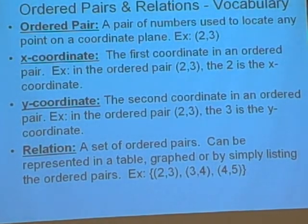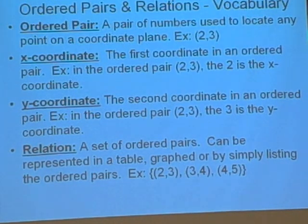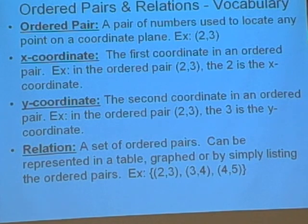The x-coordinate is the first coordinate in an ordered pair. In our example, the 2 is the x-coordinate. The 3 would be the y-coordinate, the second value in the ordered pair. A relation is a set of ordered pairs and can be represented in a table, graphed, or by simply listing the ordered pairs within fancy brackets as the example listed there.